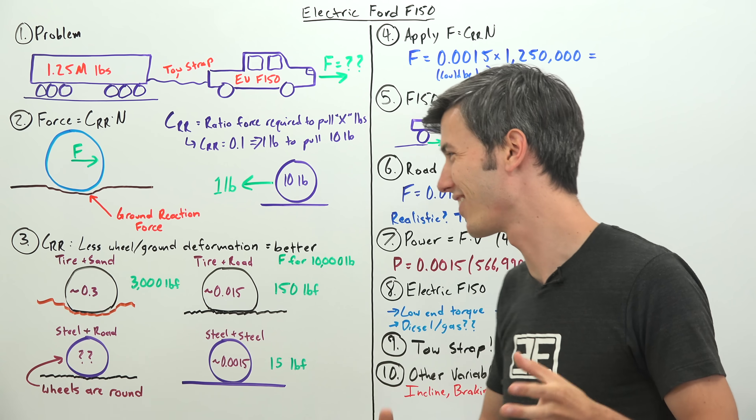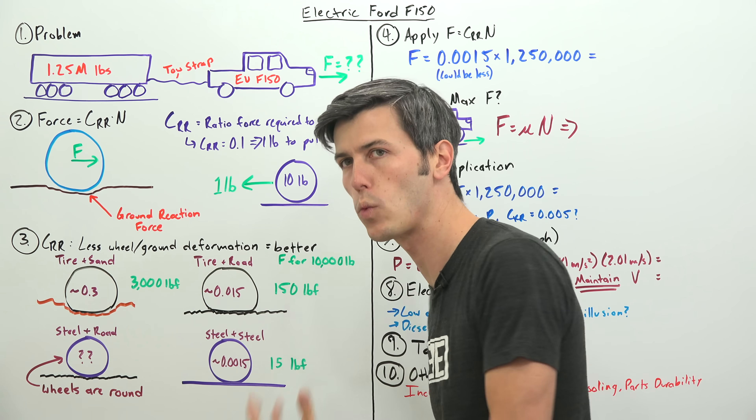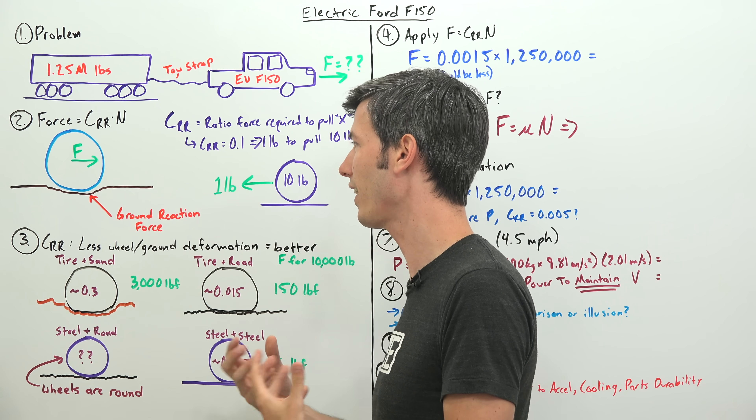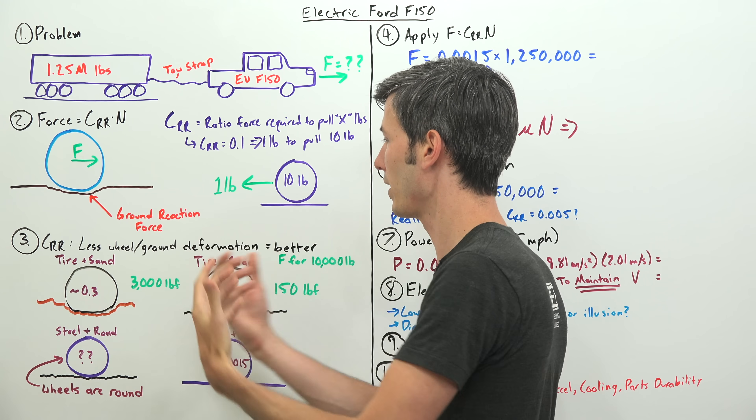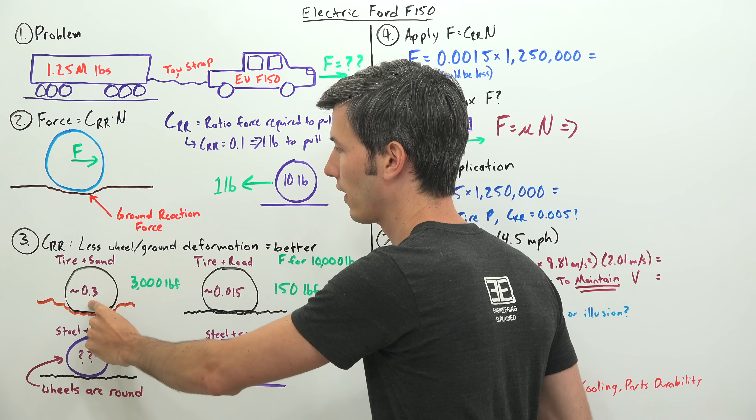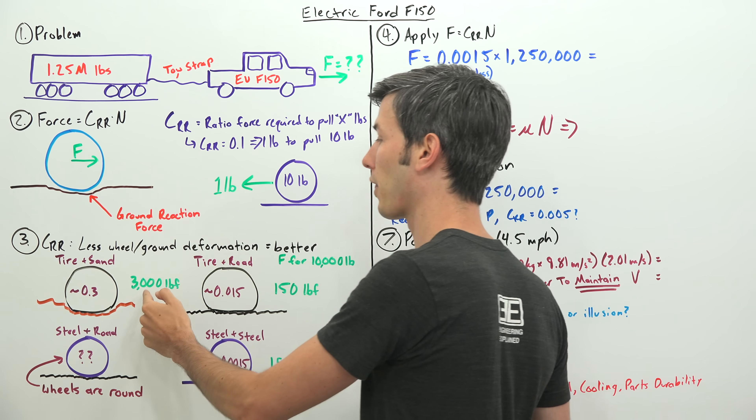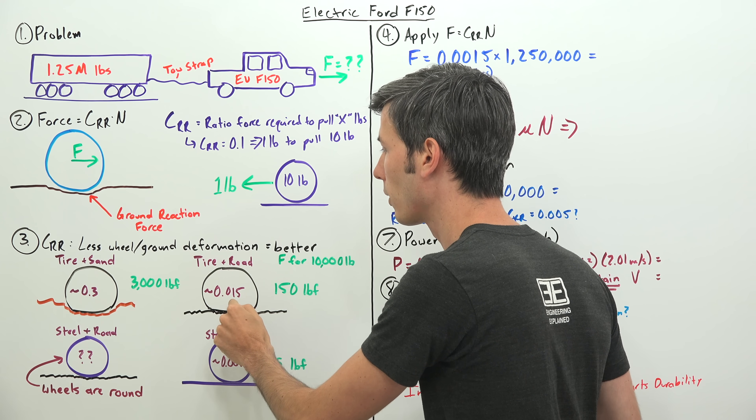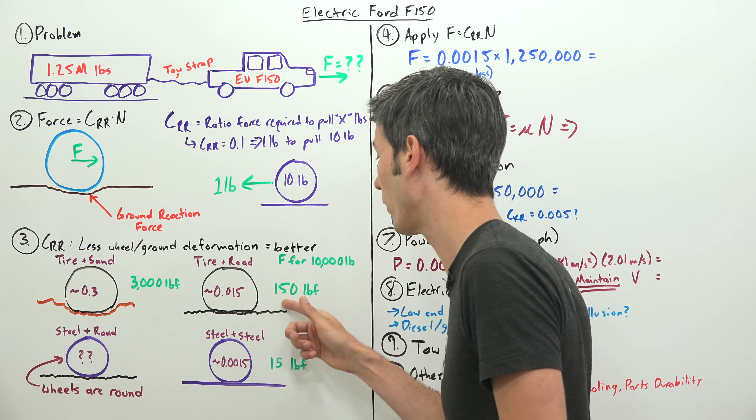The coefficient of rolling resistance changes depending on what you're using as your wheel and what you have as your ground. The less wheel deformation and the less ground deformation, the lower your coefficient of rolling resistance, meaning the less force you need to pull a certain load. For example, say we need to pull a 10,000 pound load. A regular pneumatic tire on sand has a coefficient of about 0.3, meaning we need 3,000 pounds of force to move that wheel along. If we put a tire on the road, that dramatically reduces that coefficient, and suddenly we can pull 10,000 pounds with just 150 pounds of force.